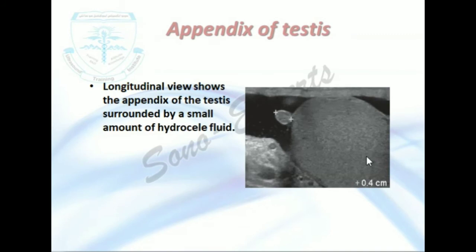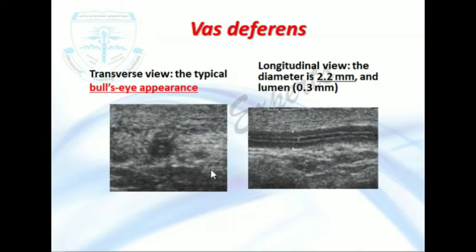Another structure is called the appendix of the testes. This is the testes, this is the upper pole, and here a small tissue is attached to the testes surrounded by fluid, which is a hydrocele. This is the vas deferens. This is the tube in longitudinal view. This is the transverse view, which appears like a bull's eye.